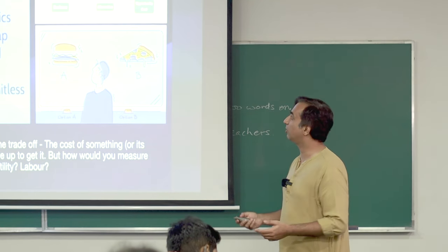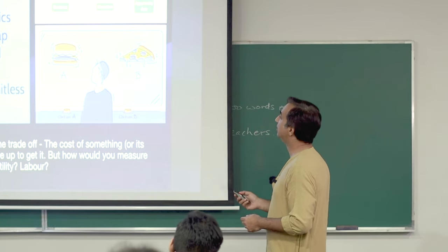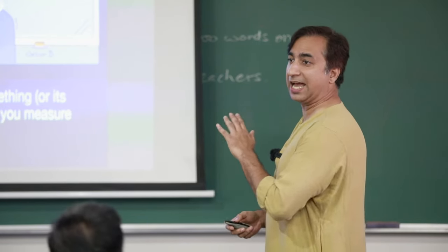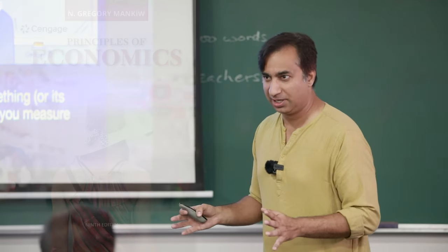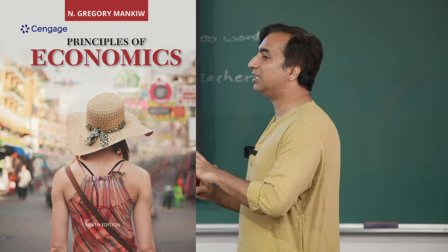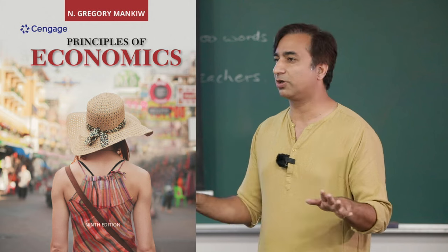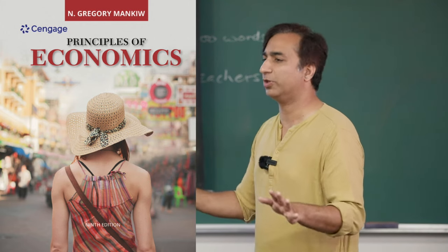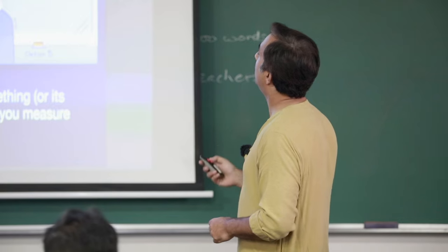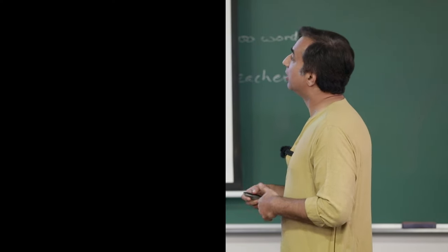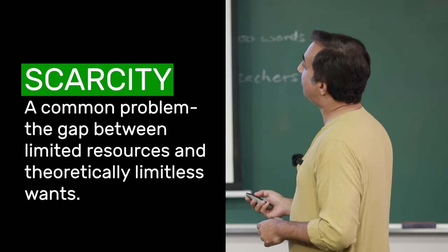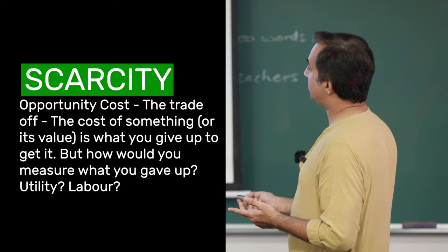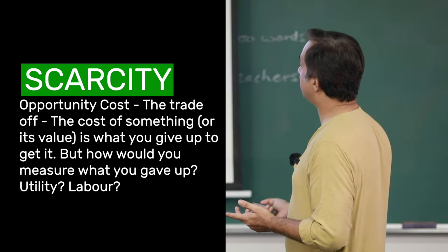One answer provided by mainstream economics is scarcity. The most popular economics textbook in the world, Principles of Economics, begins by saying scarcity is the fundamental economic problem - there's a gap between limited resources and theoretically limitless wants. This creates opportunity cost: the cost of something is what you give up to get it.